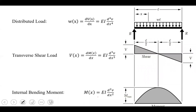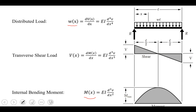For a distributed loading, if the moment is second order, taking a derivative gives a linear shear, and another derivative gives a constant distributed load. Going the other direction: if the distributed load is constant, taking an integral gives linear shear and another integral gives second-order moment. Taking further integrals gives third-order slope and fourth-order deflection.